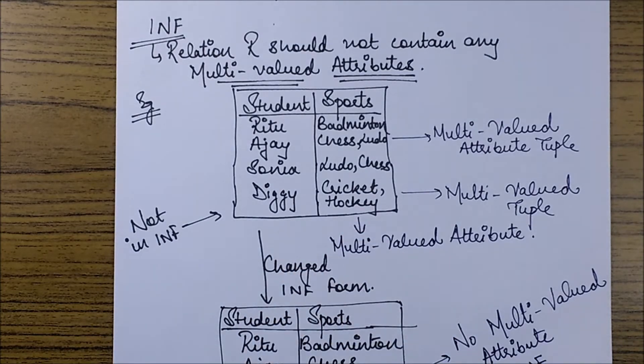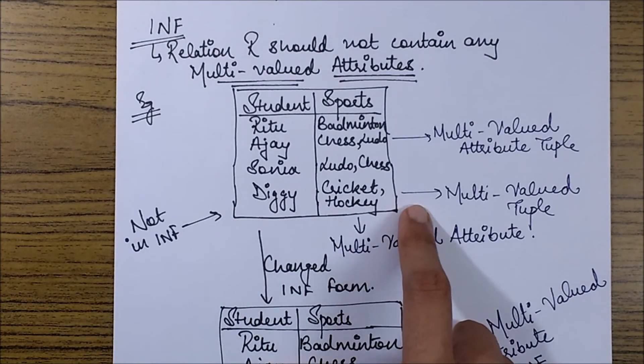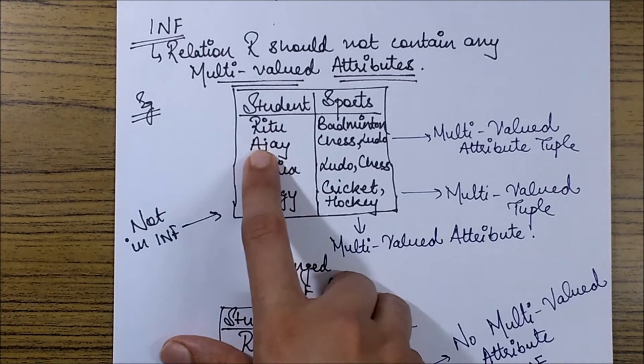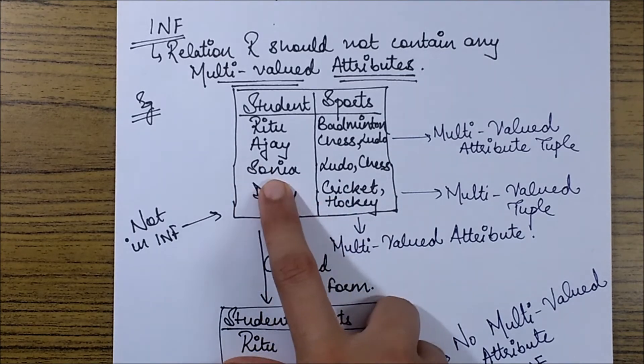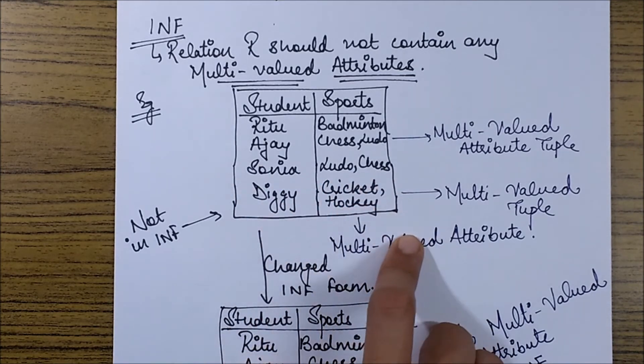See, we have been given an example in this case. This is an example of students and the various sports played by them. It says that Ritu plays badminton, Ajay plays chess and Ludo, Sonia plays Ludo and chess, Diggy plays cricket and hockey, etc.